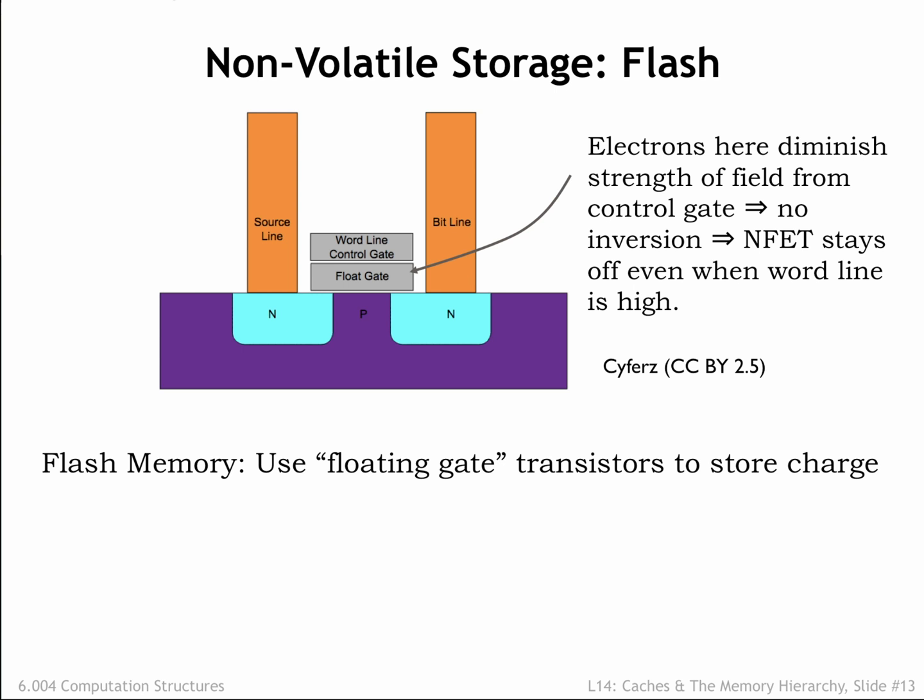In fact, if we can measure the current flowing through the MOSFET, we can determine how much charge is stored on the floating gate, making it possible to store multiple bits of information in one flash cell by varying the amount of charge on its floating gate.